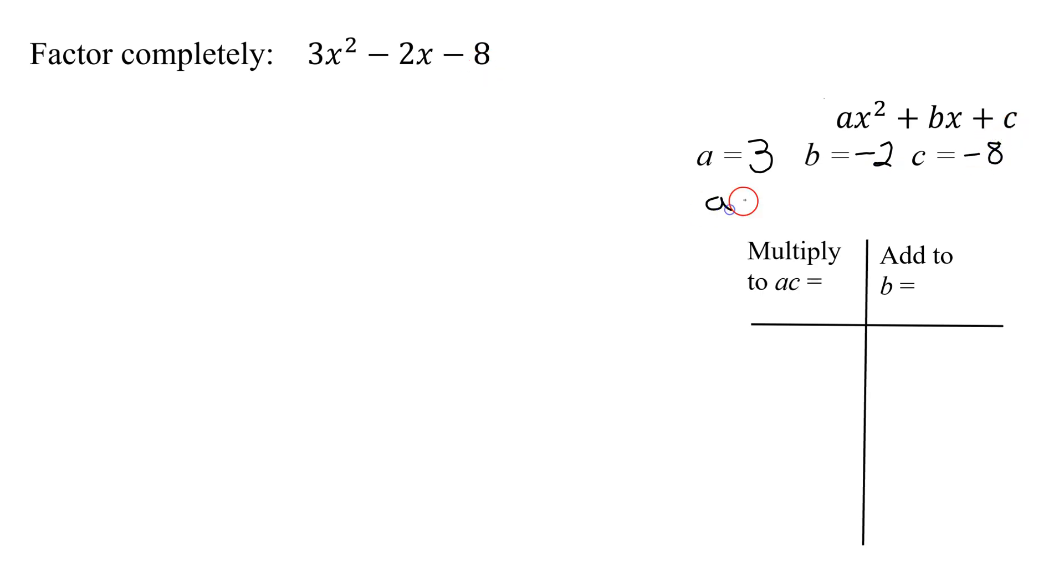So we multiply a times c, which is 3 times -8, which is -24. So I need 2 numbers that multiply to ac, or -24, and add to b, which is -2.